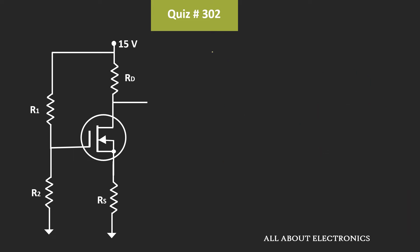That means VGS is equal to minus 1V. We have already been given the value of the gate voltage. So once we know the value of VGS, from the gate voltage we can find the voltage VS. Using the drain current, we can find the value of the source resistor, and likewise we can also find the value of the drain resistor.